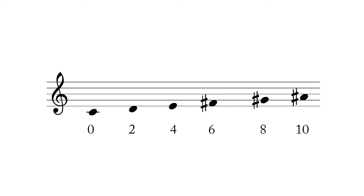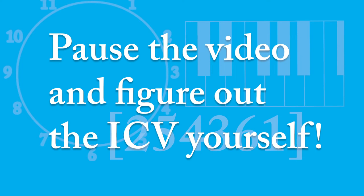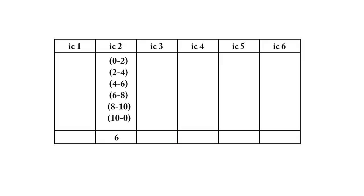For example, the whole-tone scale's interval class vector looks drastically different than the one for the diatonic collection. It's entirely concentrated on major seconds slash minor sevenths, major thirds slash minor sixths, and tritones.